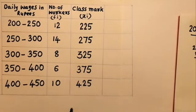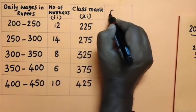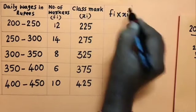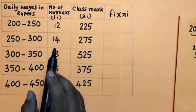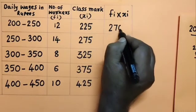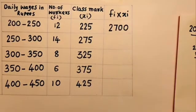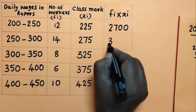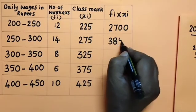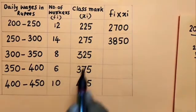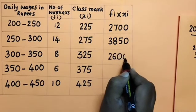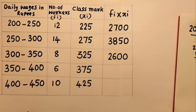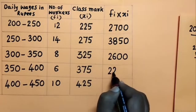Now we multiply fi and xi to get fi×xi. Multiply 12 into 225, we get 2700. Next, multiply 275 into 14, we get 3850. Then 8 into 325 gives 2600. And 6 into 375 gives 2250.